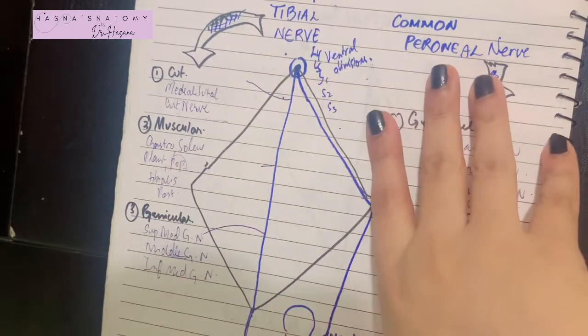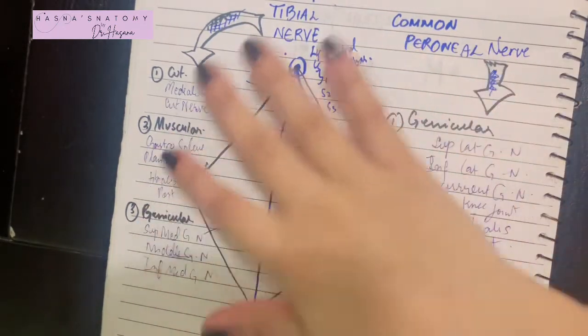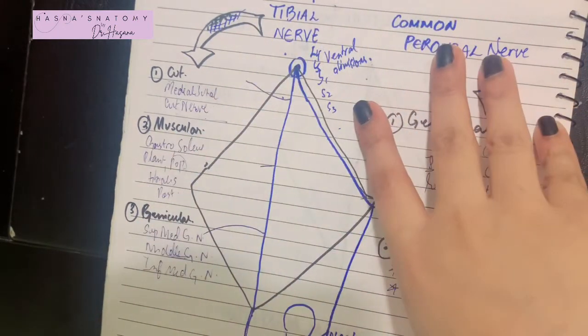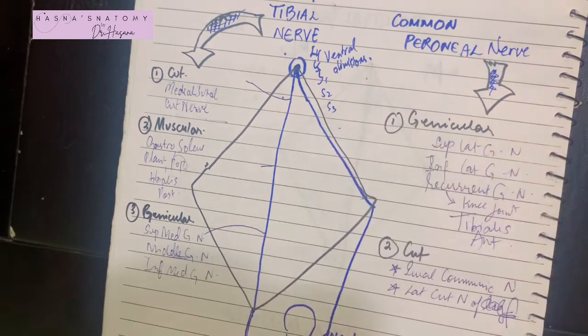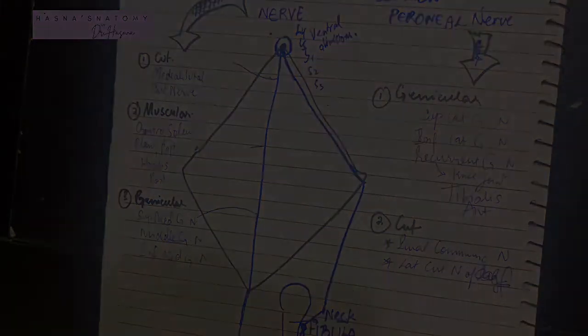That was all for the tibial and common peroneal nerves, and we have now covered all the contents of the popliteal fossa. I really hope you understood the video — don't forget to subscribe to my channel. Thank you so much for watching.